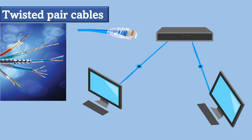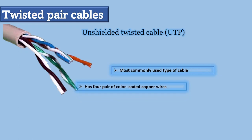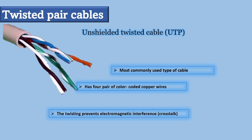Twisted pair cables come in two forms. The first one is unshielded twisted pair cable, which is by far the most commonly used type of cable, especially in the telephone network. Unshielded twisted pair, or UTP, has four pairs of color-coded copper wires covered with flexible plastic sheets. The twisting prevents electromagnetic interference or crosstalk from outside sources.